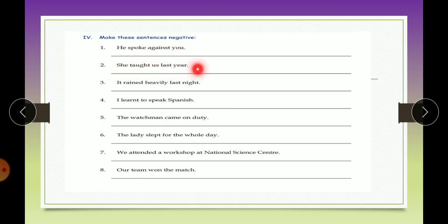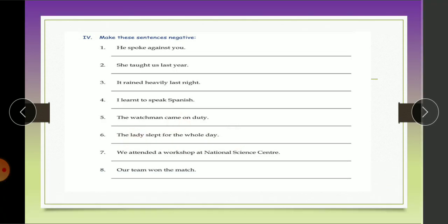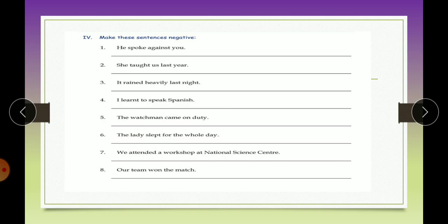She taught us last year. She did not teach us last year. It rained heavily last night. What is the verb? Rained. So rain ko rain mein change kariye aur rain se pehle did not laga dijiye. It did not rain heavily last night. I learned to speak Spanish. I did not learn to speak Spanish. The watchman came on duty. The watchman did not come on duty. The lady slept for the whole day. What is the verb? Slept. So slept ko sleep mein convert karenge aur usse pehle did not laga dijiye. So the lady did not sleep for the whole day.